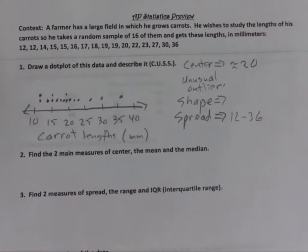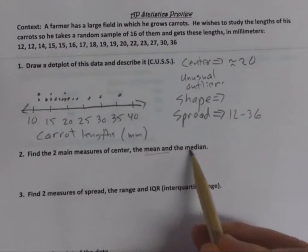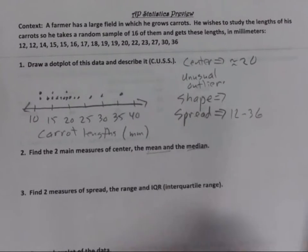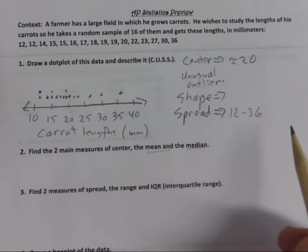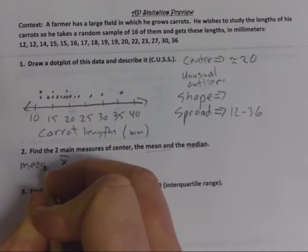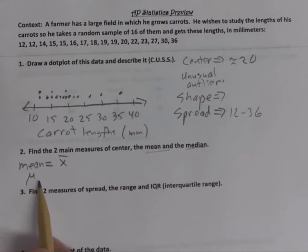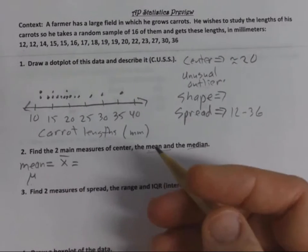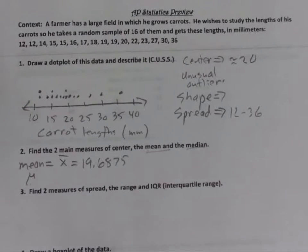Finding the two measures of center: the mean and the median. Those are the two main measures. There's also the mode — the number that occurs most often — and the mid-range, which we don't really deal with. The mean is labeled X-bar for a sample value, or the Greek letter mu for a population value. Since this is a sample, we call it X-bar. Our mean is 19.6875.